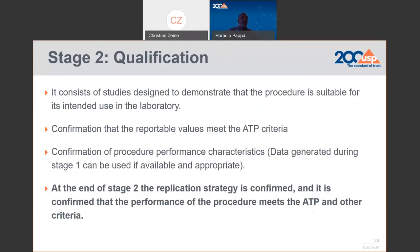Stage 2 is the qualification of the method—this is where we actually perform the validation. It is mostly focused on accuracy and precision. If we can demonstrate that the accuracy and precision of the method are adequate within the range of the method and meet the ATP requirements, we can say the method is qualified. We also have data generated during Stage 1 that include the rest of the performance characteristics such as linearity and limit of quantitation. At the end of Stage 2, the replication strategy is confirmed and it is confirmed that the procedure performance meets the ATP and other criteria. The method is then ready to implement.